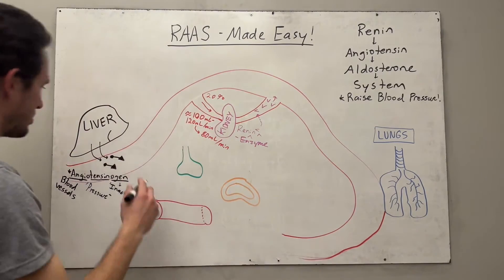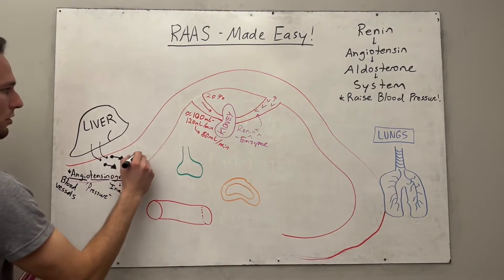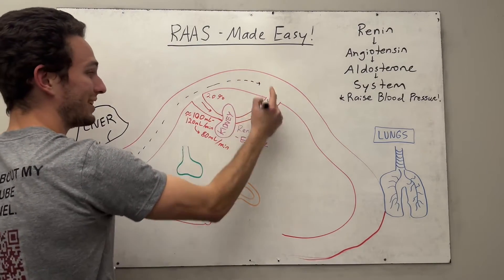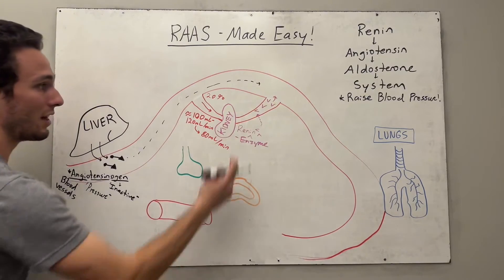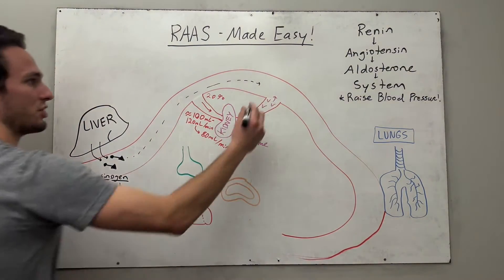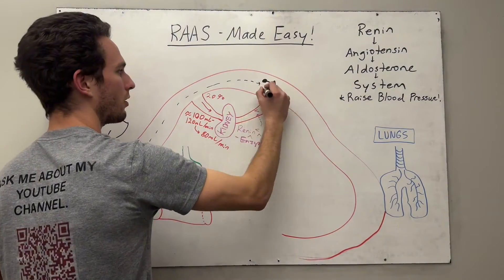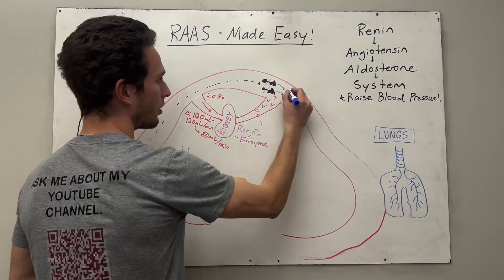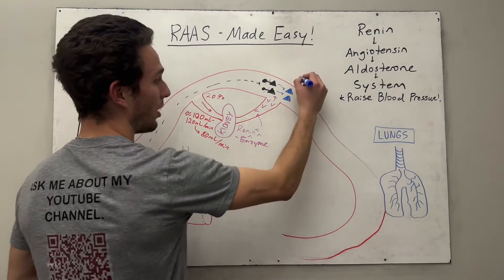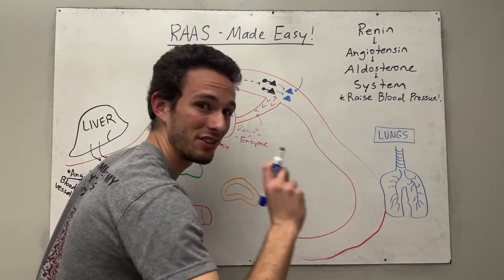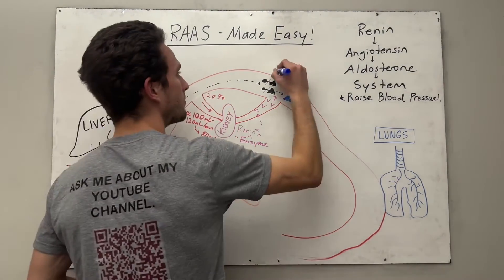So angiotensinogen will go throughout circulation, and when the kidneys release renin, the renin is going to cleave this angiotensinogen, and now we just formed the molecule angiotensin 1.